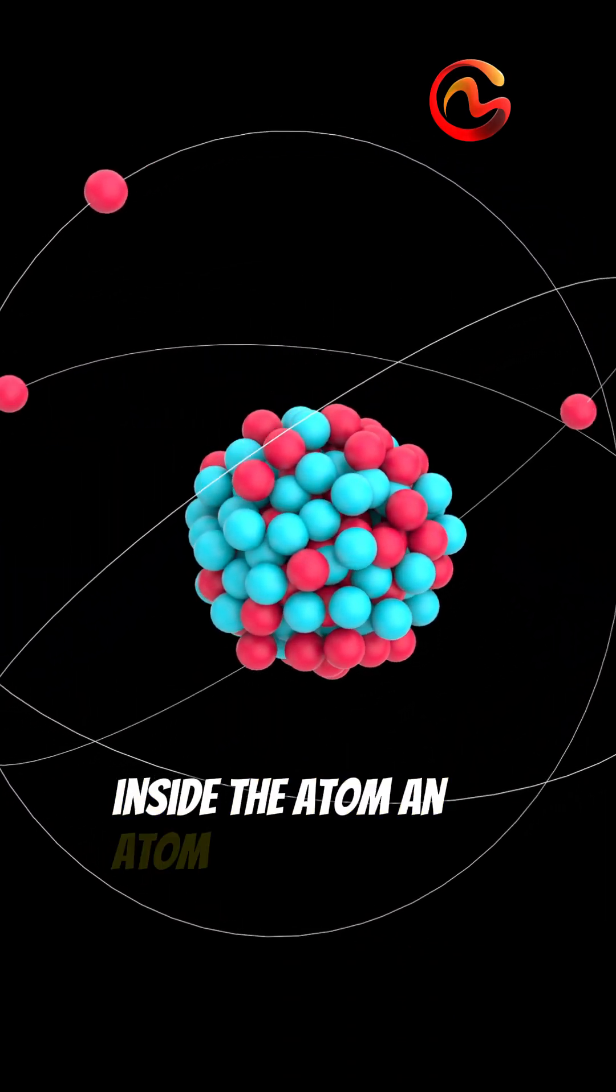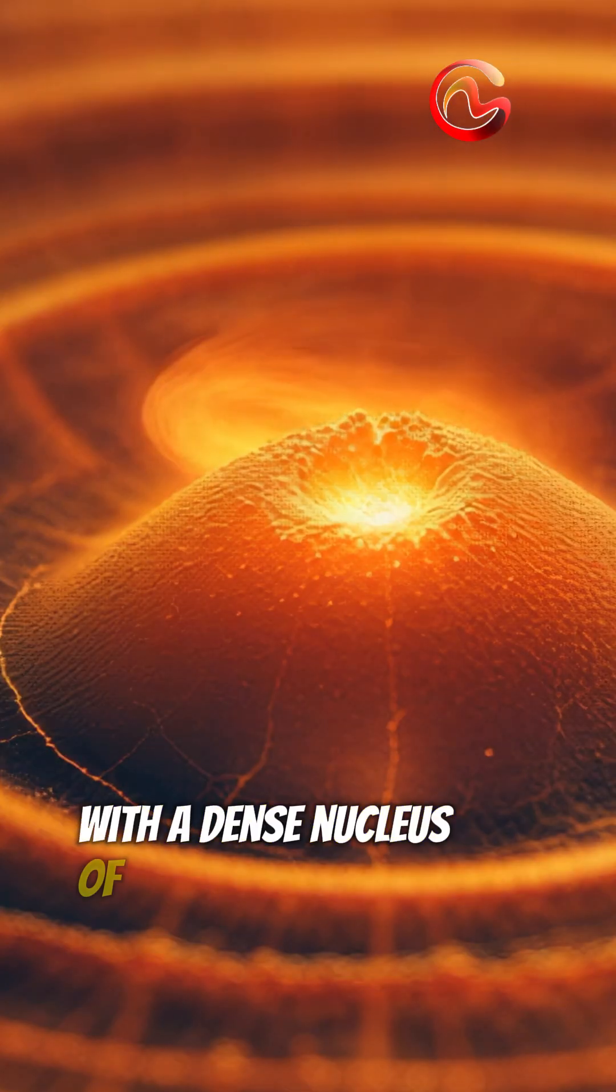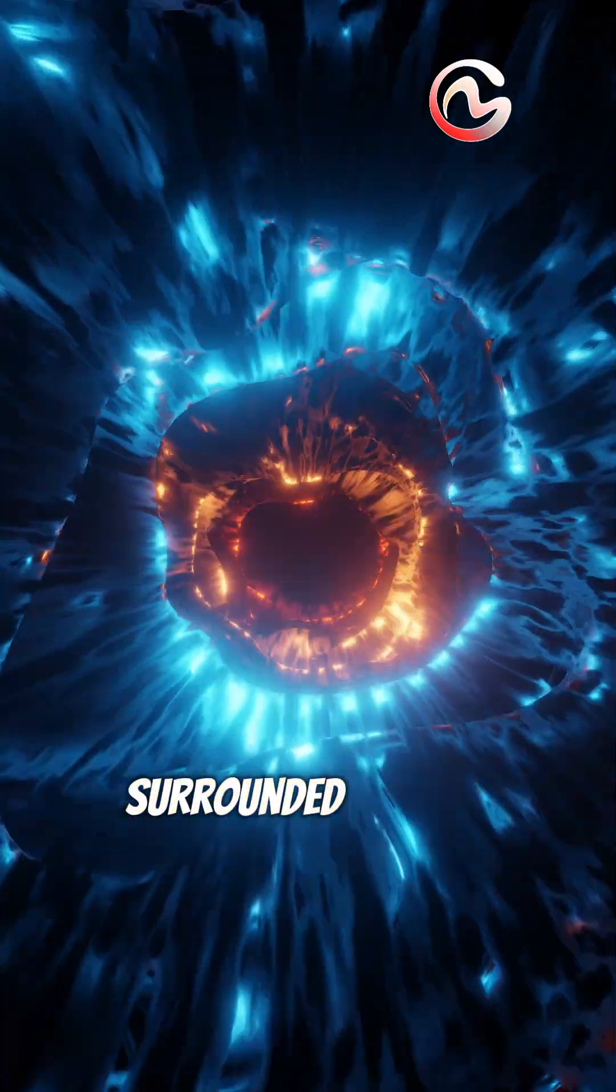Inside the atom, an atom is mostly empty space, with a dense nucleus of protons and neutrons, surrounded by fast-moving electrons.